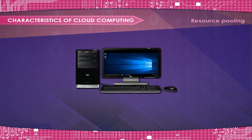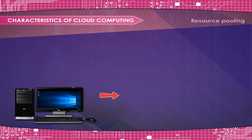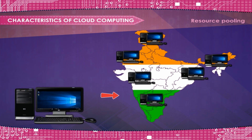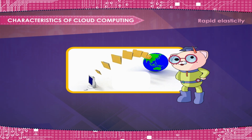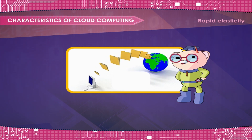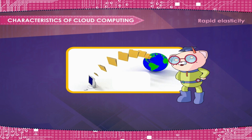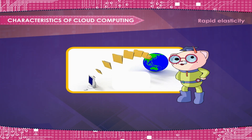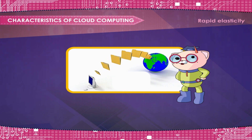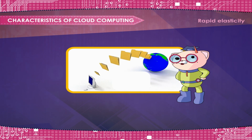Resource Pooling: service multiple customers from the same physical resources by securely separating the resources on a logical level. Rapid Elasticity: resources are provisioned and released on-demand or automated based on triggers or parameters. This will make sure your application will have exactly the capacity it needs at any point in time.